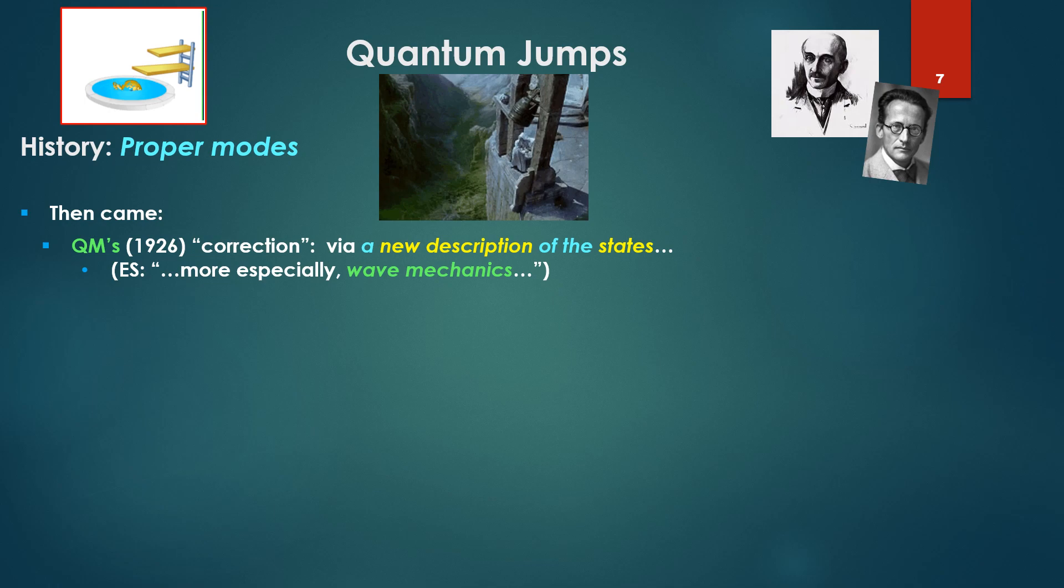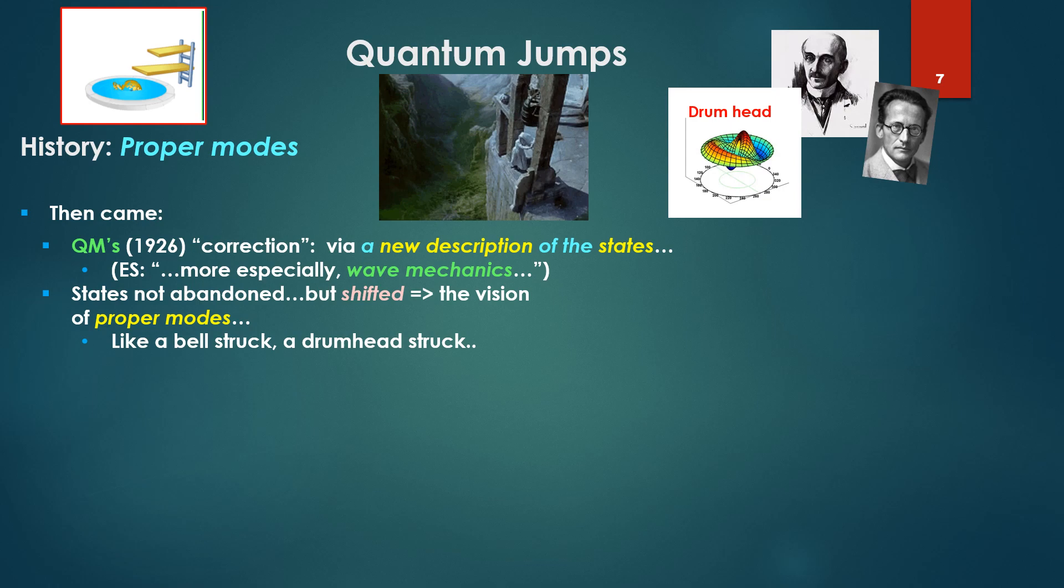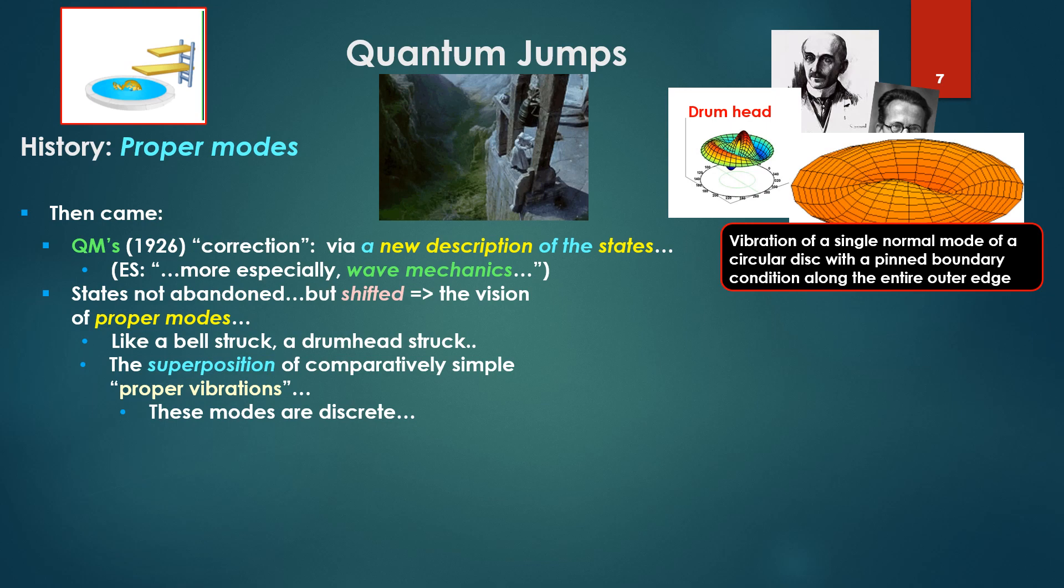Then came quantum mechanics correction, that is, a new description of the states. For Schrödinger, more especially, wave mechanics. States were not abandoned, but shifted to the vision of proper modes, like a bell struck, a drumhead struck. Thus, the superposition of comparatively simple proper vibrations, where these modes are discrete.